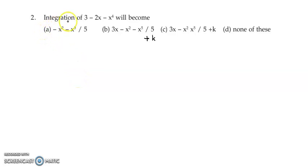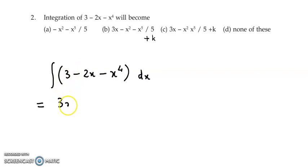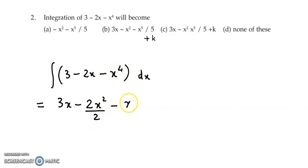Now let's look at the second question. Here we are asked to find the integration of the function 3 minus 2x minus x raised to 4. We integrate with respect to x, and we get: integration of 3, which is a constant, gives 3x; minus 2 times integration of x gives x square by 2; minus integration of x raised to 4 gives x raised to 5 upon 5 plus k.